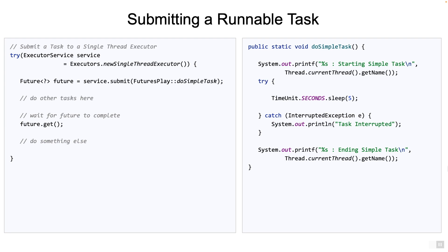The execution policy is basically determined by which concrete implementation of ExecutorService you're using. In this example, we are submitting a Runnable and what's returned back is a future object. Using this future object, you can inquire on the state of the task or simply wait for the task to complete. But in our case, there is nothing to retrieve because no data is returned to the caller. That's why we have a question mark as the generic type of the future - it's unknown. Note that the submit method returns immediately with a future and you can do other operations as necessary.